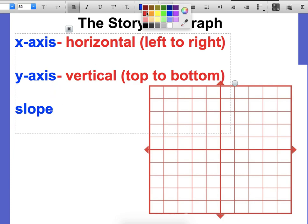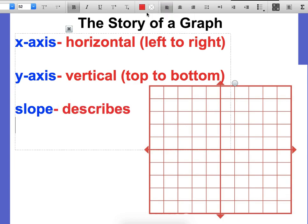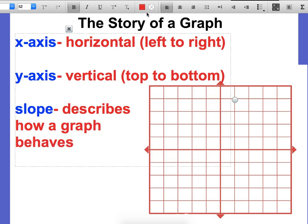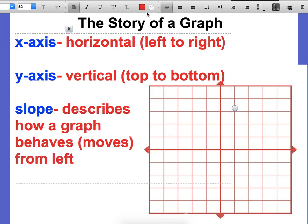Slope, that's going to be a new term for us. Slope describes how a graph behaves and we can think of the word behaves as moves from left to right. So just like we read a book from left to right in English, it's going to move from left to right on a graph.